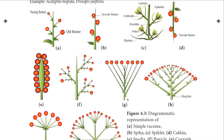In the main axis elongated category, the first type is simple raceme. The inflorescence axis is unbranched and bears flowers in acropetal succession — younger flowers are produced at the top. Example: Crotalaria retusa and mustard. The second type is spike, where flowers are also in acropetal succession but the flowers are sessile — they do not have a pedicel — and it is called spike. Example: Achyranthes.